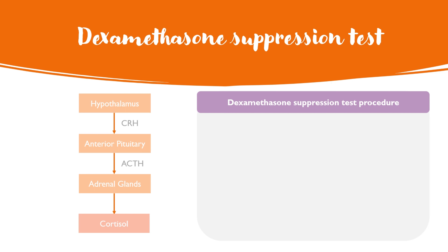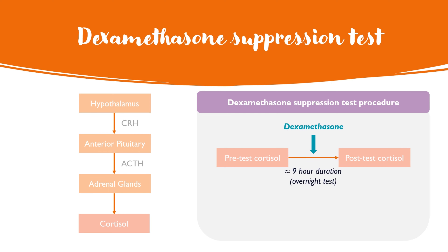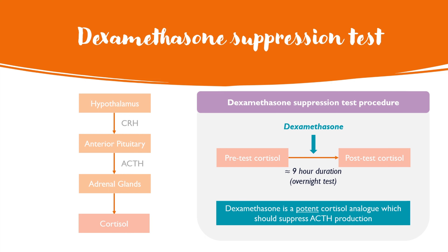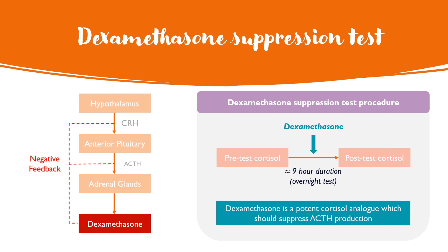Moving towards the test itself, the procedure involves three stages: we first measure the pre-test cortisol, then inject dexamethasone into the patient, and then measure the post-test cortisol after around nine hours in the overnight test. The whole principle behind this test is that dexamethasone is a potent cortisol analogue — it acts like cortisol but is stronger — and it should theoretically suppress ACTH based on negative feedback. We look at cortisol values using both a low-dose test and a high-dose test.